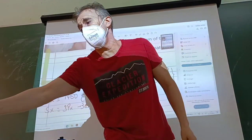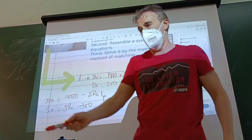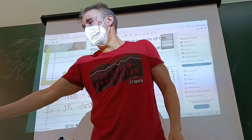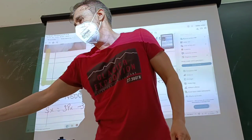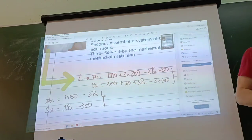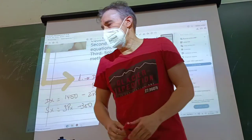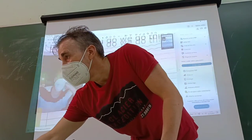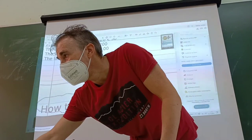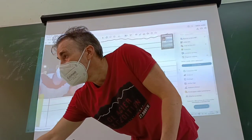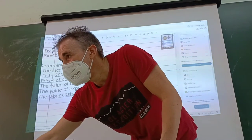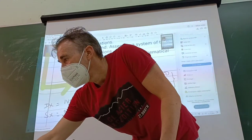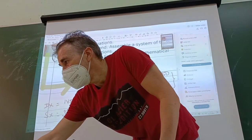First, remember: income was 1000 euros, taste was 200 units, and price of other products was 15 euros. And for supply — technology was 200 units, the expected price was 100 units, and labor cost, or cost of production, was 300 units.